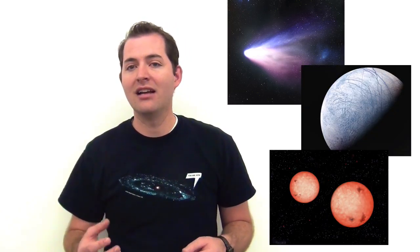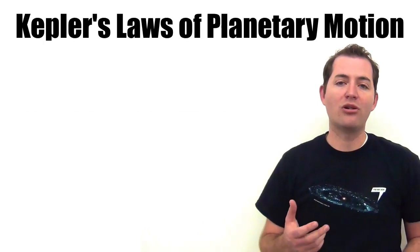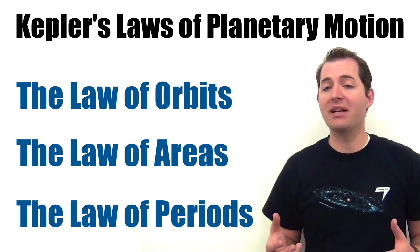Now we can use Kepler's three laws of planetary motion to describe the orbits of lots of other objects, such as comets, moons, or even binary stars, where we have one star orbiting a second star. And these three laws, the law of orbits, the law of areas, and the law of periods, all apply to these situations.